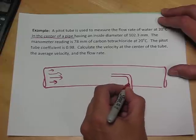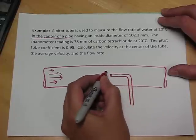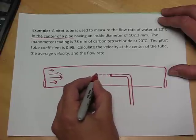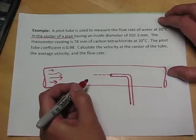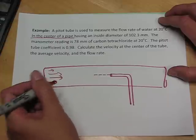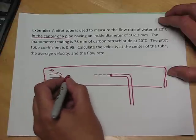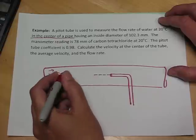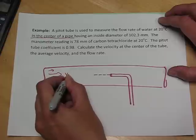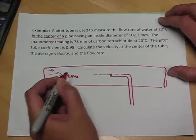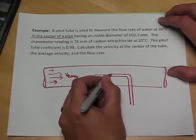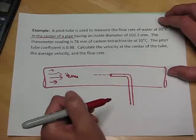So a pitot tube is an L-shaped tube that is positioned in this case to intercept the center streamline of flow in this tube. So there's a flow out here that has an average velocity, but it also has a velocity as a function of position. The position at the center has the maximum velocity, so VZ max is at the center of the tube, and that velocity comes along this streamline and stops at the pitot tube.